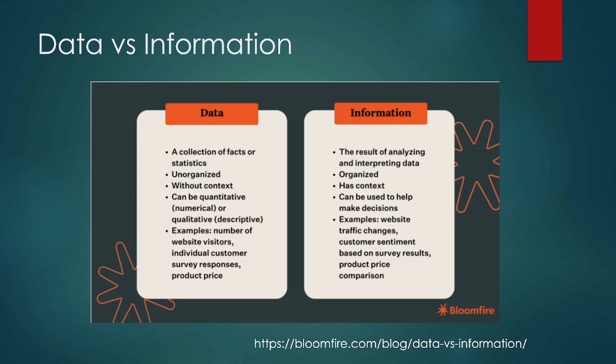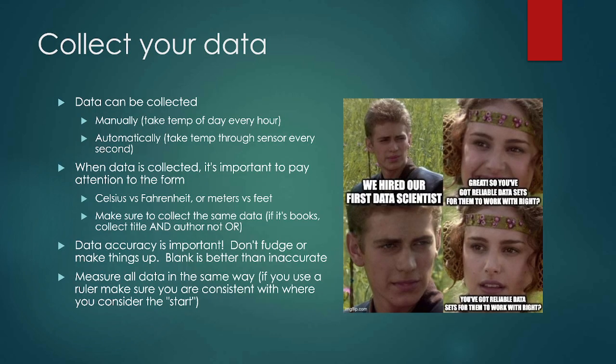When we have data we are generally going to have to store it somewhere. When we are storing that data it can become organized but isn't necessarily useful yet until we figure out what we need to ask of that data. When we collect our data we can do manual collections or automatic collections. Automatic collections might include setting up a sensor to get a value, or web scraping to collect data from other places. We could also manually collect data such as surveying people.